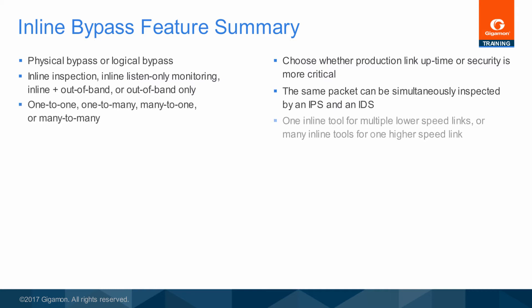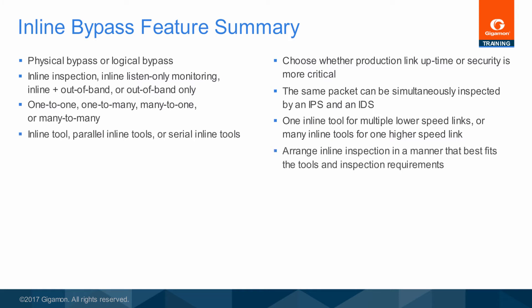Any packet passing through the inline bypass ports is available for inspection inline, and also for monitoring out of band, in almost any combination of inspections. In situations where multiple inline networks are aggregated before forwarding traffic to an inline tool, it is possible to assign specific VLAN IDs to each monitored path to ensure that traffic is returned to the correct path. One or several production links can be sent to a single powerful inline tool, or the traffic can be divided among multiple inline tools. Packet inspection can be done using just one inline tool, in parallel by multiple tools, or queued in a specific series before approved packets continue through to the original destination.